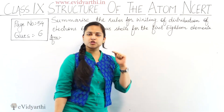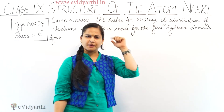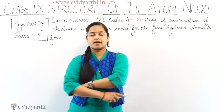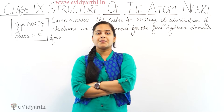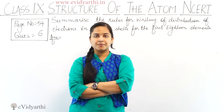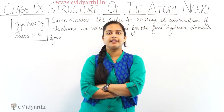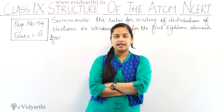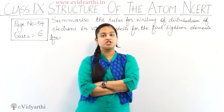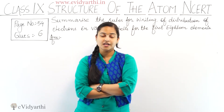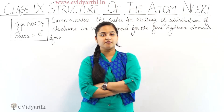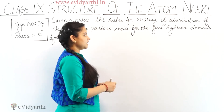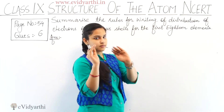There is a formula I told you a few videos ago: 2n². This formula 2n² tells us the maximum number of electrons present in the given shell — the maximum number of electrons that can be present in a shell. The formula is 2n².